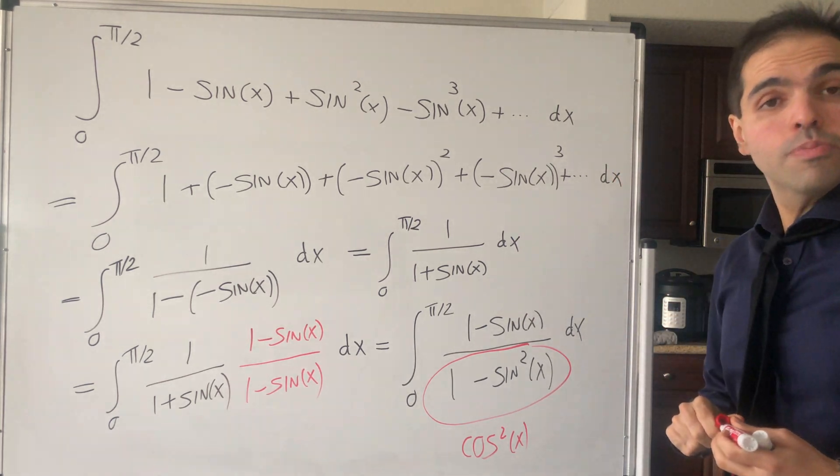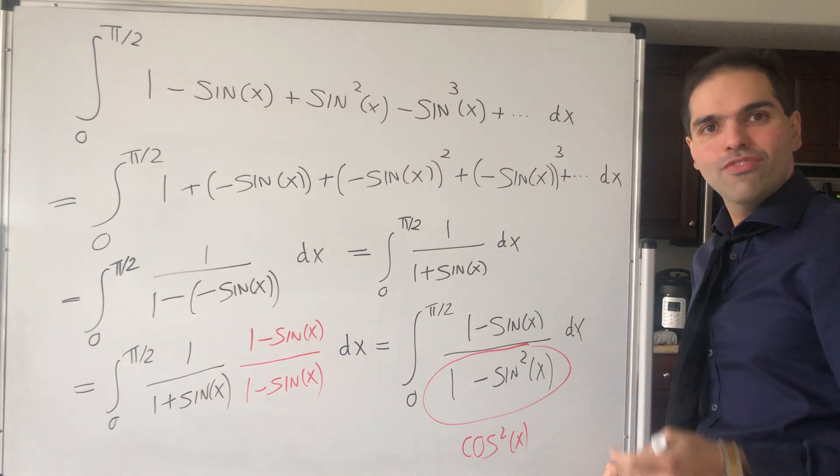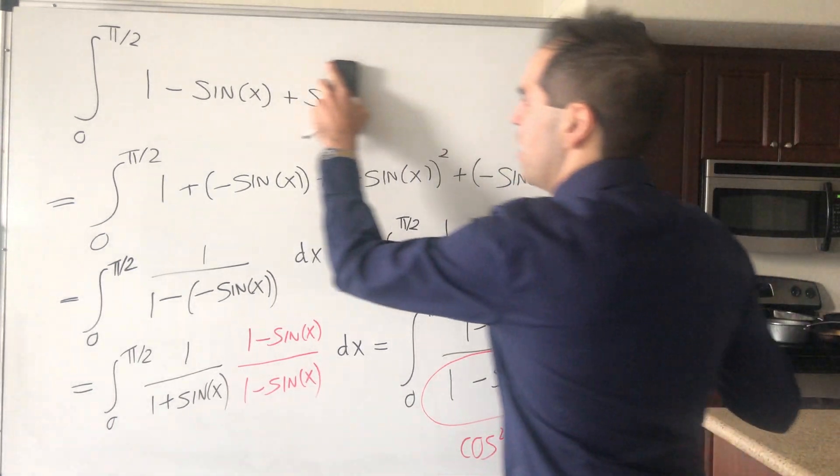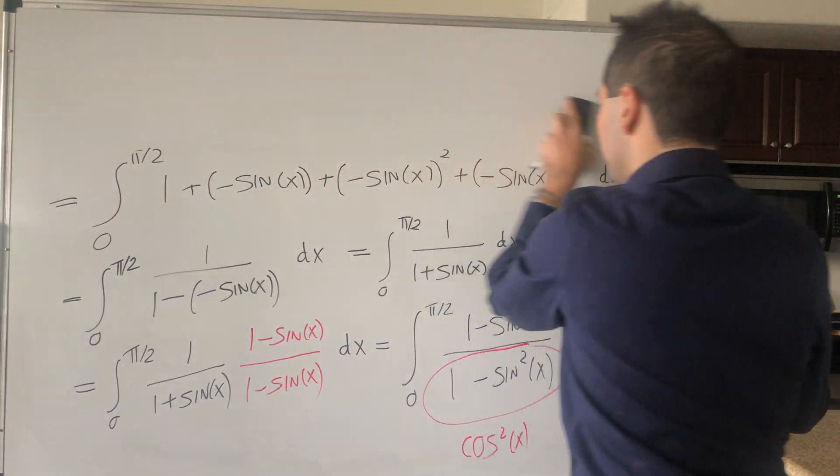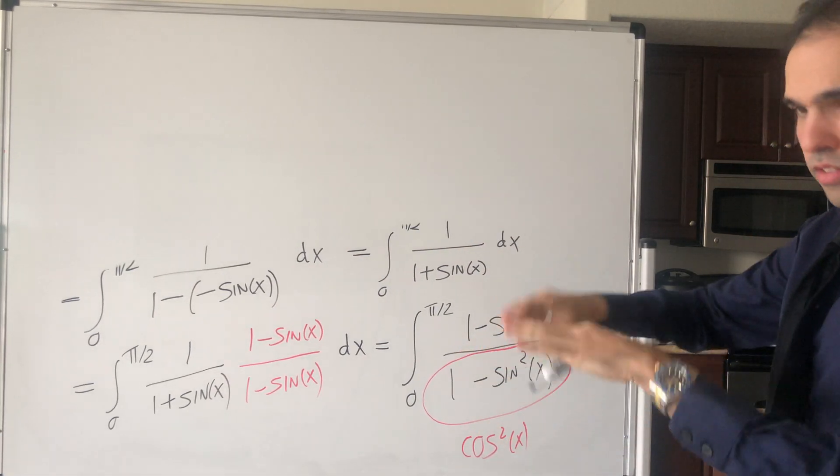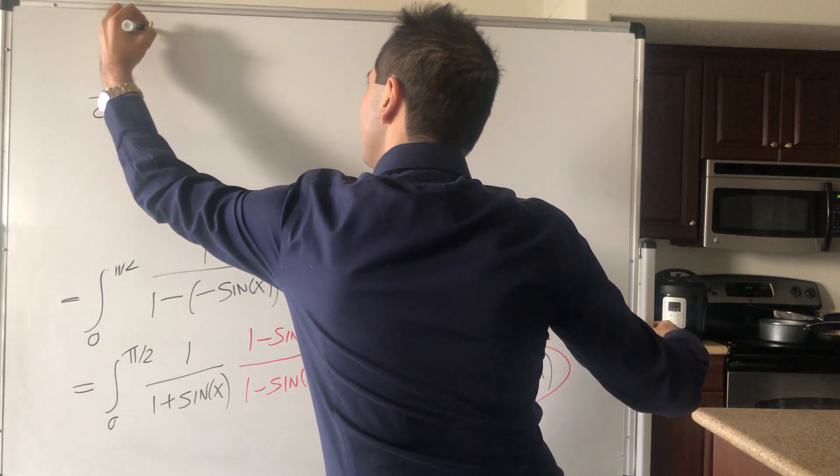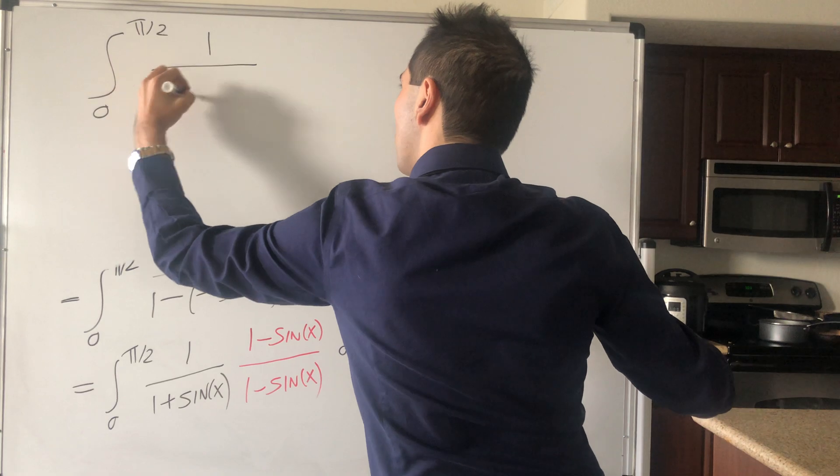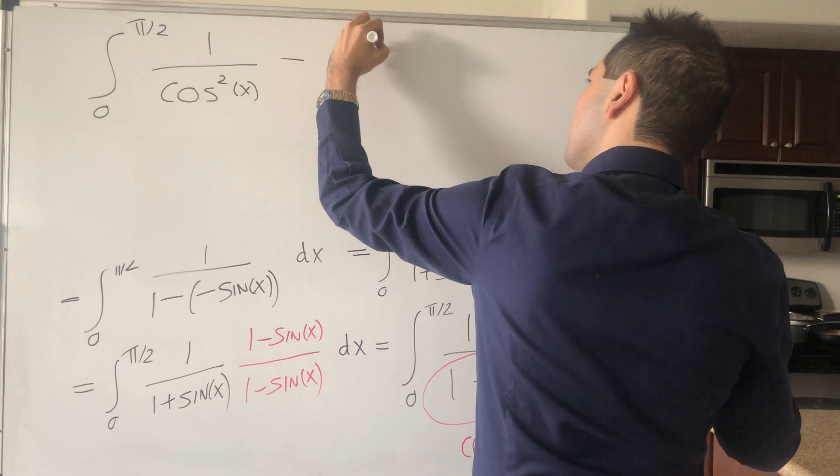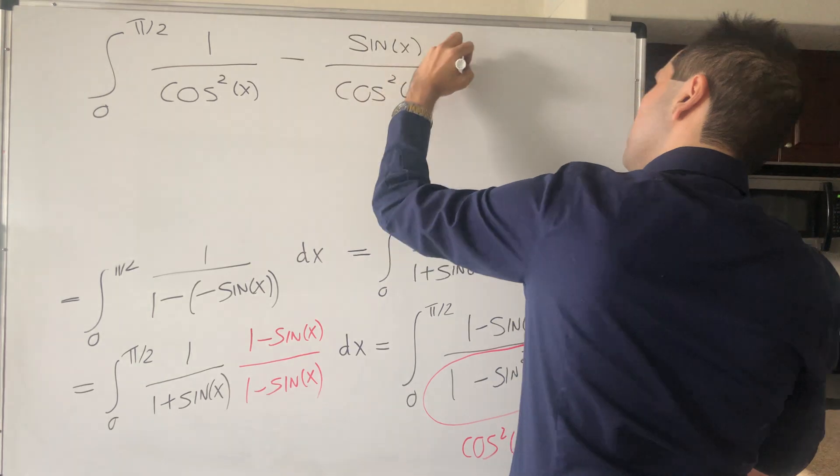Oh, it's pretty fascinating, in my opinion, because it's like a conjugate form for square roots, but in this case for trigonometry. So what are we left with? Well, so we get, if you want splitting up everything, you'll see why, integral from 0 to pi over 2 of 1 over cosine squared of x minus sin of x over cosine squared of x dx.